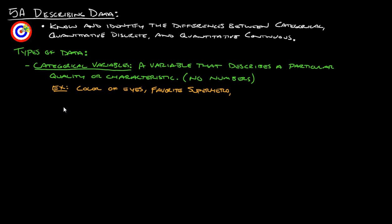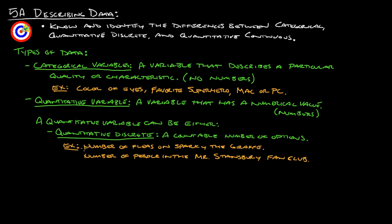Next one is quantitative variable. A quantitative variable is a variable that has some kind of numerical value. Somewhere in there, there's a number. Now within quantitative variables, there's two different types.